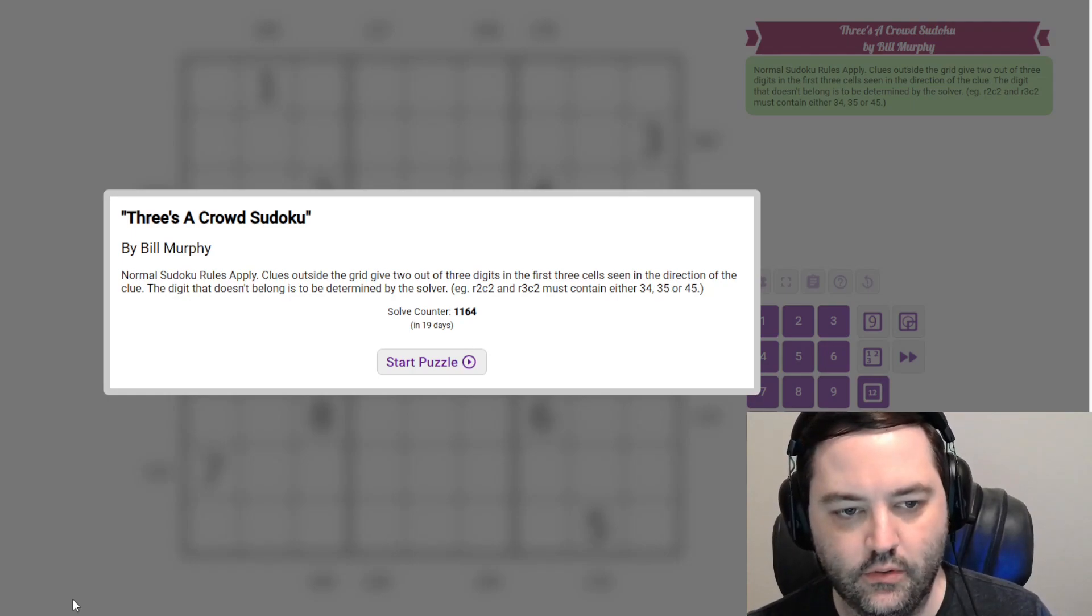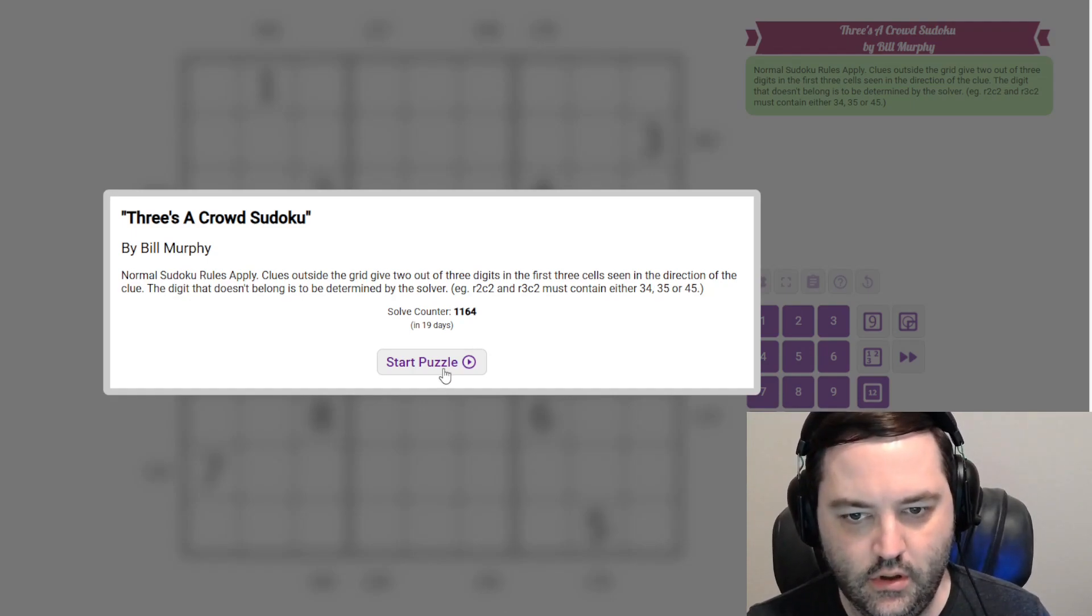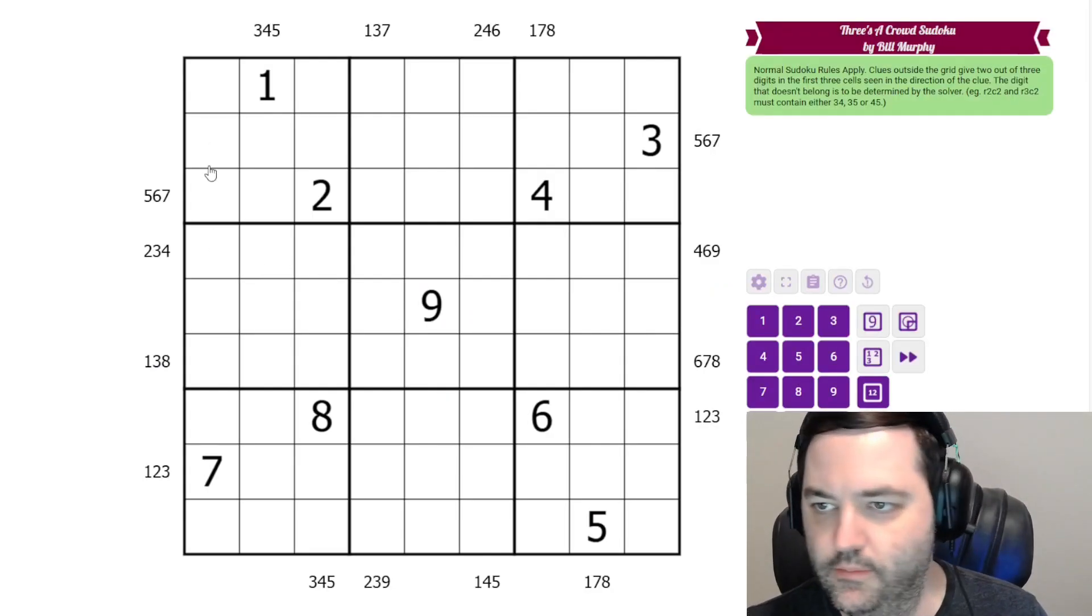Today I'm solving 3's a Crowd Sudoku by Bill Murphy. This is an outside Sudoku, which we've done before, but where one of the digits doesn't belong.